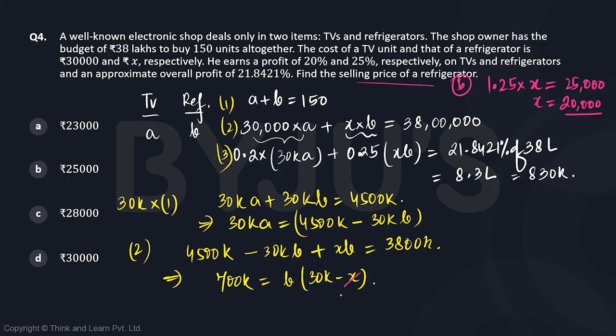If X is 20,000, then 30,000 minus 20,000 is 10,000, giving us B equals 70. If B is 70, then A equals 80.